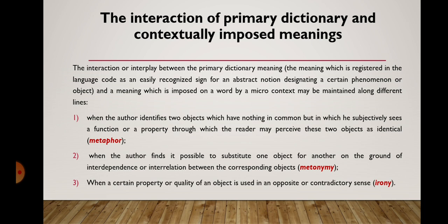Speaking about the first criterion in the classification of lexical stylistic devices — namely, the first sub-point — that is the interaction of primary dictionary and contextually imposed meanings. The interplay between the primary dictionary meaning (the meaning registered in the language code as an easily recognized sign for an abstract notion designating a certain phenomenon or object) and a meaning imposed on a word by a micro-context may be maintained along different lines. The first line is when the author identifies two objects which have nothing in common, but in which he subjectively sees a function or property through which the reader may perceive these two objects as identical. And this is metaphor.